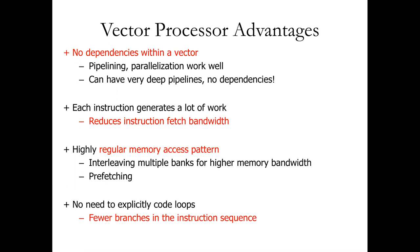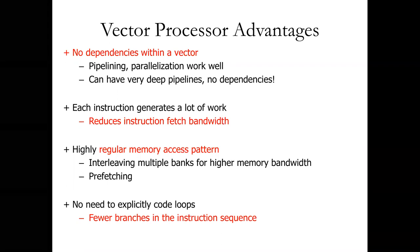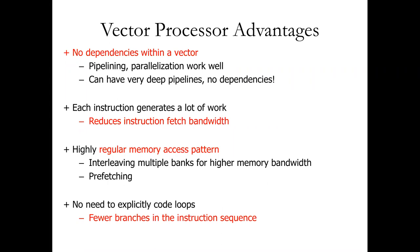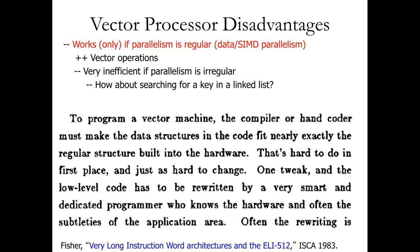Vector instructions are implicit loops — you're telling it to operate on a set of N elements, so you don't have a bunch of jumps with control flow. You don't have to go back to the beginning of the loop and keep doing the same operations over and over. Now let's talk about a couple disadvantages.